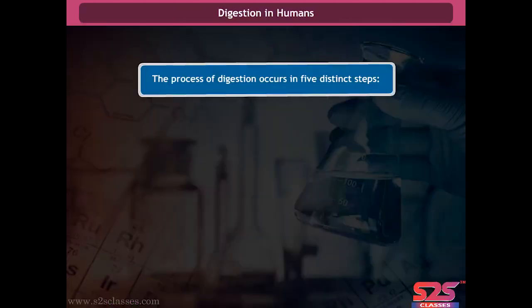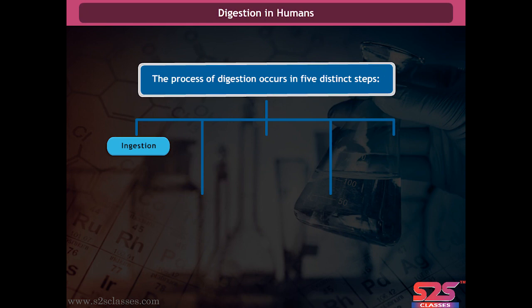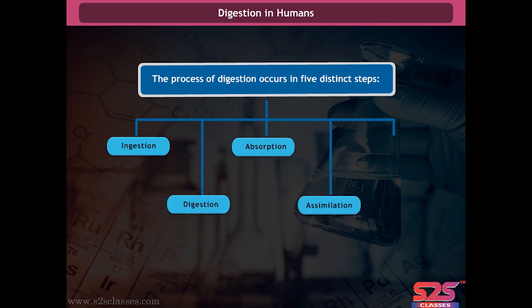The process of digestion in humans occurs in five distinct steps: ingestion, digestion, absorption, assimilation, and egestion.